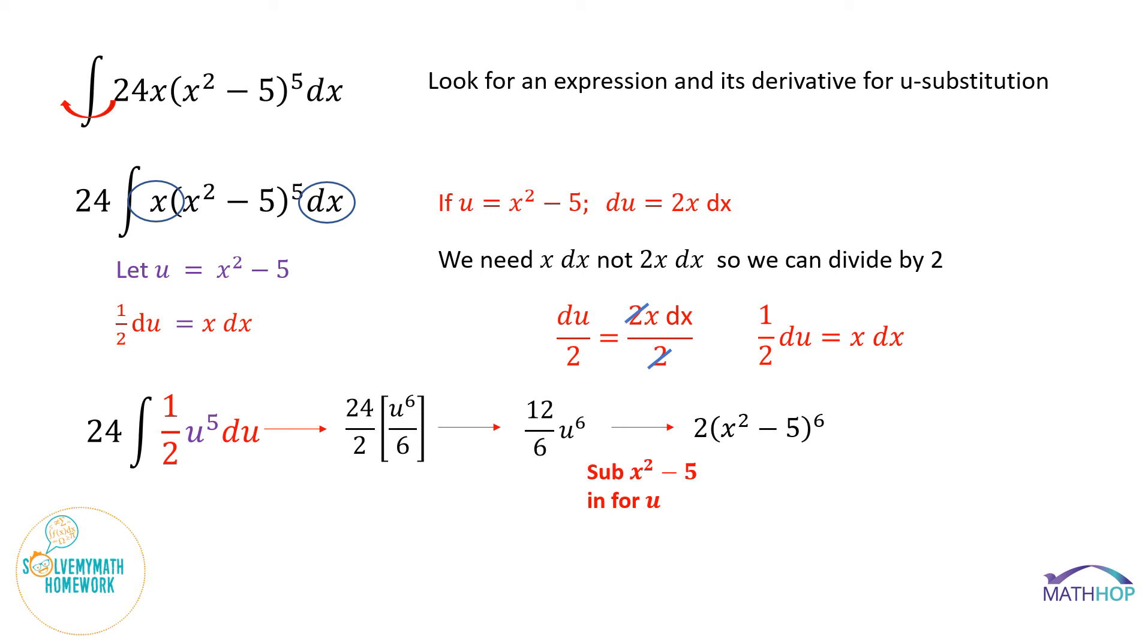We're basically done, but remember with indefinite integrals we have to add that constant because technically there's an infinite number of answers that will have this as their integral. So we are going to say add a constant c, and our answer is two times x squared minus five to the sixth power plus c, and you are done.